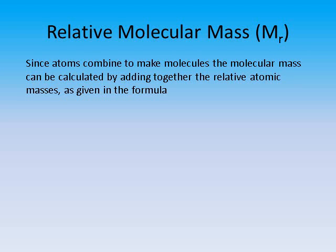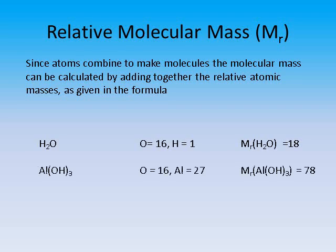Once we have the atomic mass of various elements, we can use these to calculate the molecular mass. For example, a water molecule consists of one oxygen atom and two hydrogen atoms. Oxygen has a relative atomic mass of 16 and hydrogen is 1, so when we add these together we get a molecular mass of 18. Similarly, for aluminium hydroxide: oxygen has a mass of 16 and there are three of those present, we have three hydrogens each of mass 1, and aluminium has a mass of 27. Adding those together, we get a molecular mass of 78.